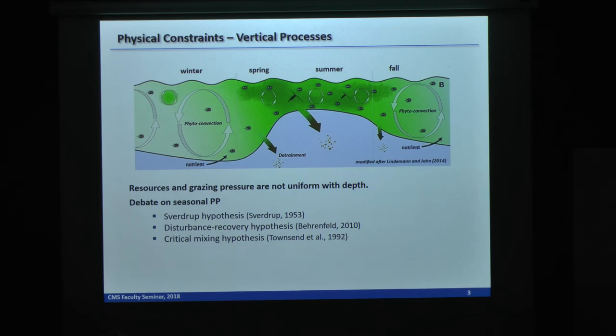Disturbance recurrence hypothesis disagrees with Sverdrup. Instead, they're thinking phytoplankton bloom occurs during the deepening phase of the mixed layer because the dilution effect dilutes the grazing faster than the growth. Critical mixing hypothesis sits between the two because they believe it's active mixing instead of the mixed layer depth that affects the deepening and shallowing of the growing layer.